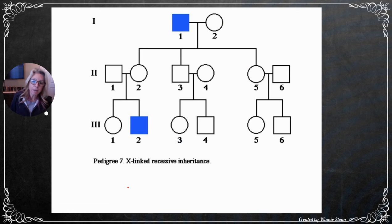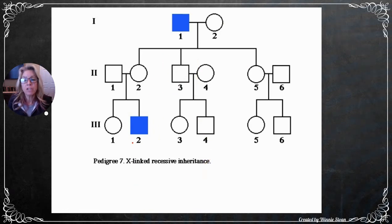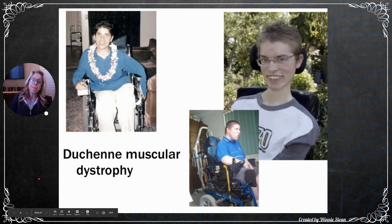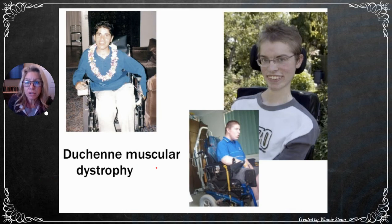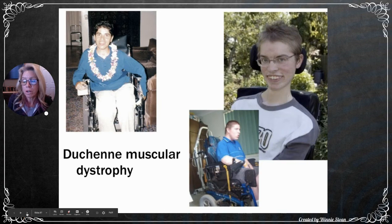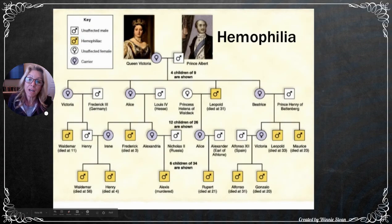Looking at a sex-linked pedigree: males have it more than females — check. It skips generations — it's recessive. For any female to have it, her father would definitely have to have the condition. Example: Duchenne's muscular dystrophy. For three boys to have this disease, the mother must have been a carrier. She appeared unaffected because she had a good copy, but she gave the affected allele to her sons.